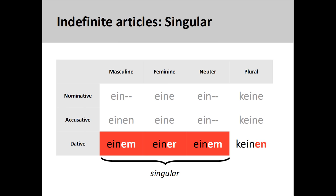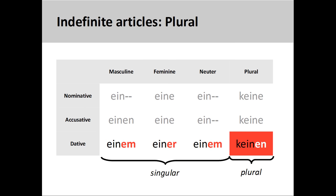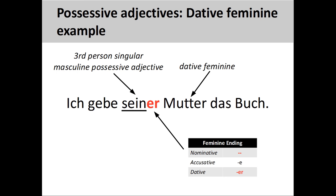These endings also indicate the number of the noun that follows. The adjective endings we saw on the previous slide, since they all modify a singular noun, are all singular endings. If the noun that is modified is plural, then you will need to use the dative plural ending, -en.